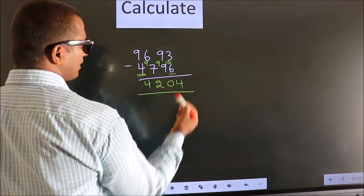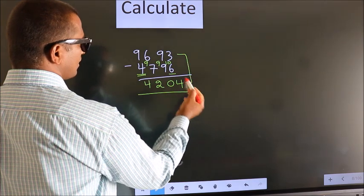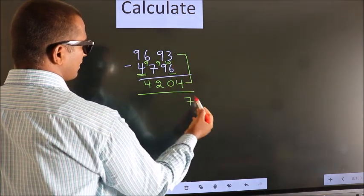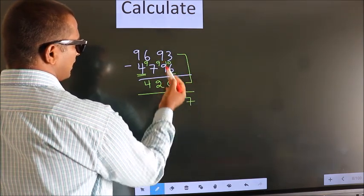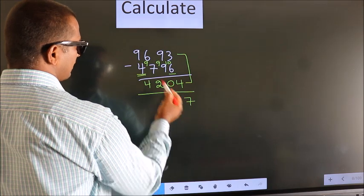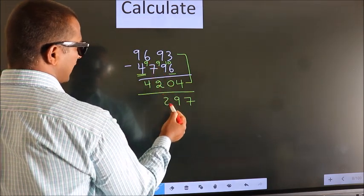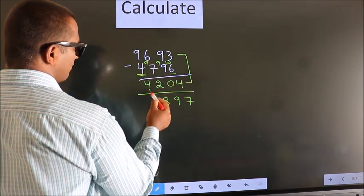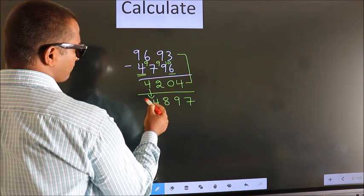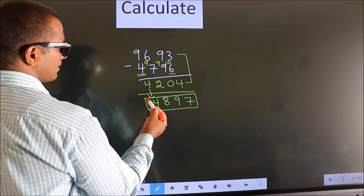Now add these two. 3 plus 4 is 7. 9 plus 0 is 9. 6 plus 2 is 8. First digit as it is, we write it down. So this is our answer.